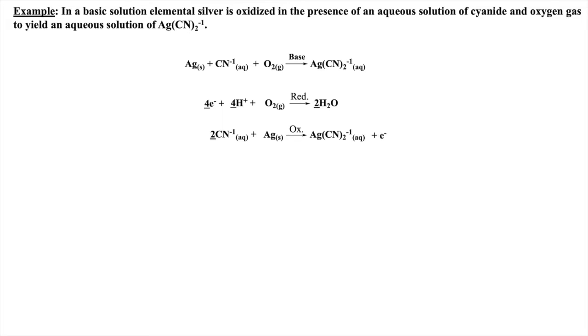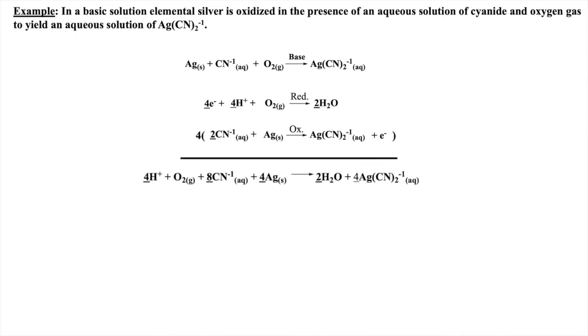To ensure that electrons will cancel when adding the half reactions, I have to first distribute a four to the oxidation reaction. Then I can add the two half reactions and simplify if necessary.